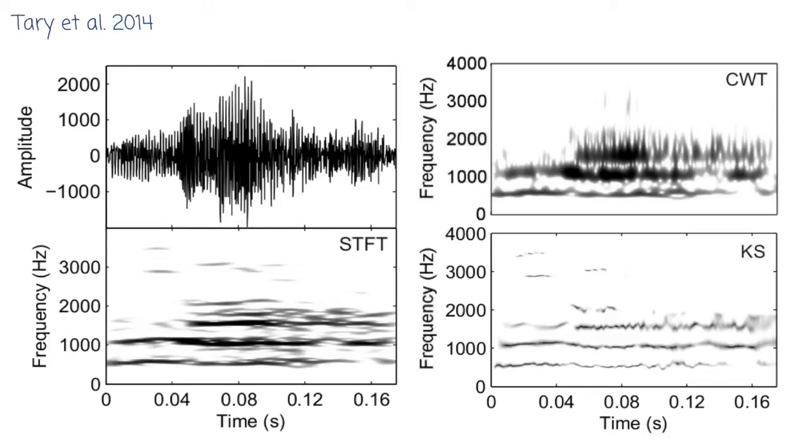In this case, in these images, it's the Y axis. So there's a signal at the top left and then three different transforms, three different spectrograms of the same signal at the bottom there and on the right.